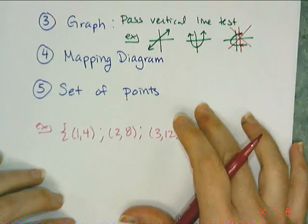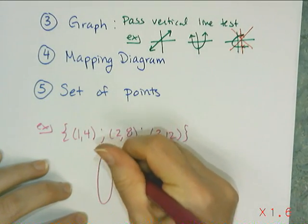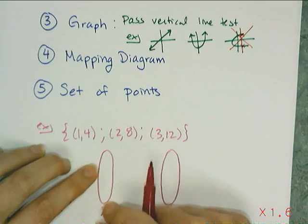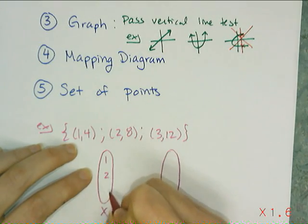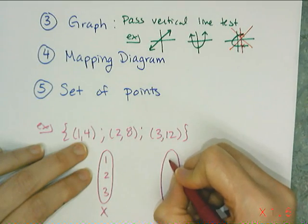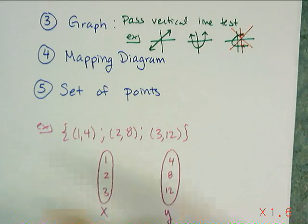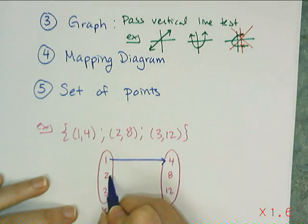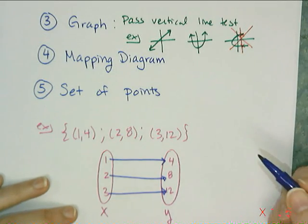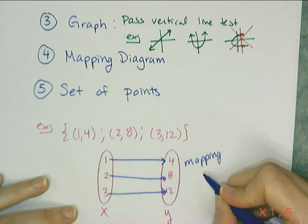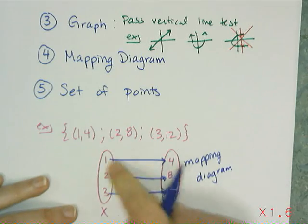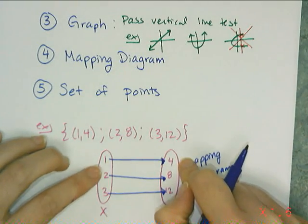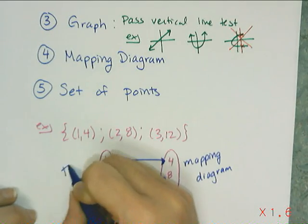I'm going to convert this set of points into a mapping diagram. In the x oval I write the domain: 1, 2, and 3. In the y oval I write the range: 4, 8, and 12. It's called a mapping diagram because you use arrows to show what y each x maps to. So 1 maps to 4, 2 maps to 8, and 3 maps to 12. The direction of the arrows matters. The test for a function is that each x has exactly one y — I don't see multiple arrows from any x, so this is a function.